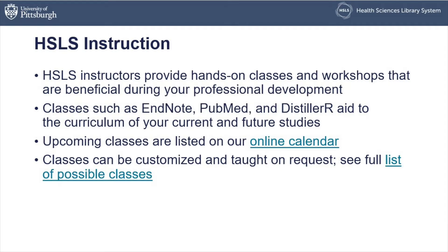Our instructors provide hands-on classes and workshops throughout professional development — things like how to work with our studio, how to launch a journal yourself, how to make visual abstracts, or learning Adobe Illustrator or Photoshop. Classes like EndNote, PubMed, and Distiller Aid are all part of the curriculum. The best thing you can do in the first year of study is learn a citation manager like EndNote, because that makes the rest of your research career so much easier — managing what you're reading in classes and for your own research.